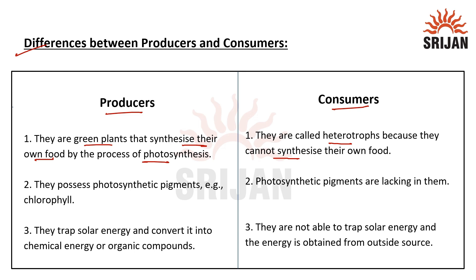Producers have photosynthetic pigments, for example chlorophyll. But consumers, since they cannot make their own food, do not have photosynthetic pigments.